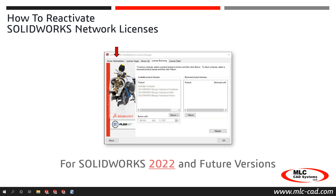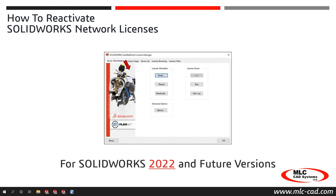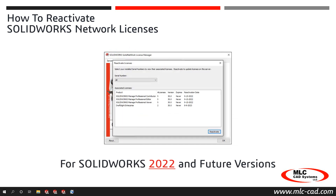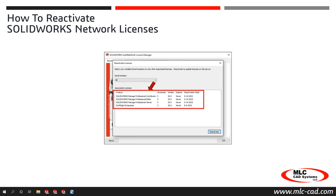From the Server Administration tab, select the Reactivate button to launch the activation dialog. From the Serial Number drop-down, select All to display all currently activated products, or choose a specific serial number to filter only those products associated to that serial number. Click Reactivate to continue.